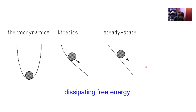Equilibrium thermodynamics can be described by this mechanical analogy where if I take this ball which lies in a cusp of energy and give it an infinitesimal perturbation, it will tend to come back to its original position. For kinetics, we have a hill with a varying gradient and a ball rolling down the hill. Energy is being dissipated in that process, and the steady state is when we have a constant gradient and the ball is rolling and dissipating energy, but an observer located on the ball will not see a change around them.